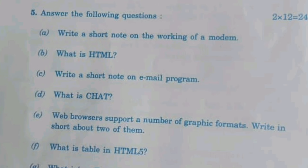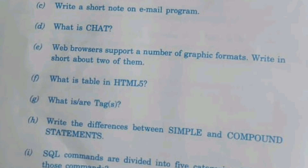Web browser supports a number of graphical formats — write a short note on two of them: JPG, PNG, GIF. What is a table in HTML5? What are tags? The hypertext that we write within angle brackets is called a tag, which has a predefined meaning to the browser. The basic definition is called a tag.